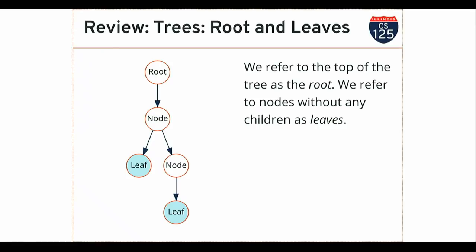Any node in the tree that has no children is referred to as a leaf. So every tree has at least one root, and only one root, and at least one leaf. A single-node tree: the root is the single node, and it's also a leaf because it has no children. When we implement recursive algorithms on trees, the leaf nodes are important because that's typically where we want to stop — that's frequently where my recursive algorithm will stop, also known as the base case: the place where I can't make the problem smaller anymore.